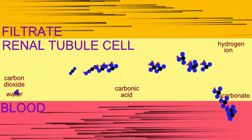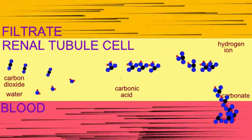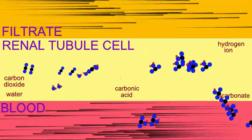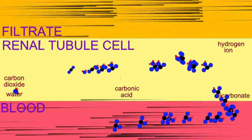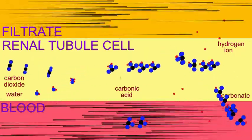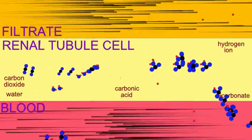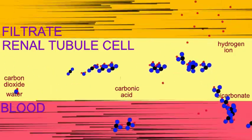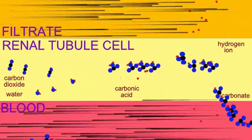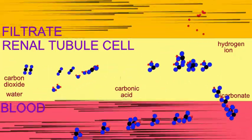The bicarbonate is sent to the blood where it functions as a buffer. Hydrogen ions are then pumped into the filtrate so that they can be excreted in urine.